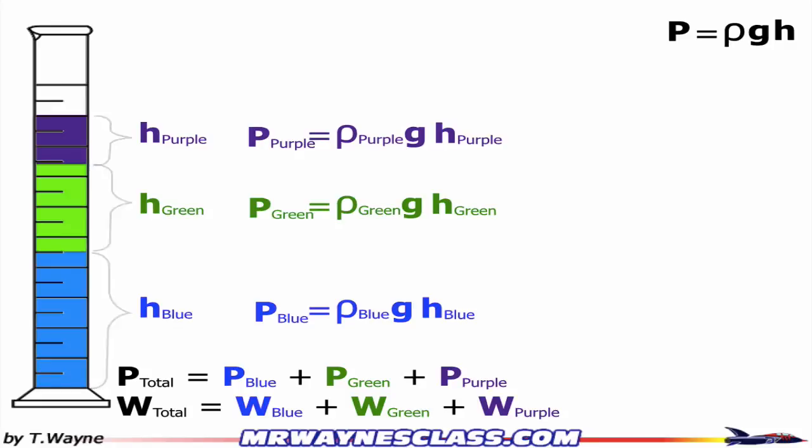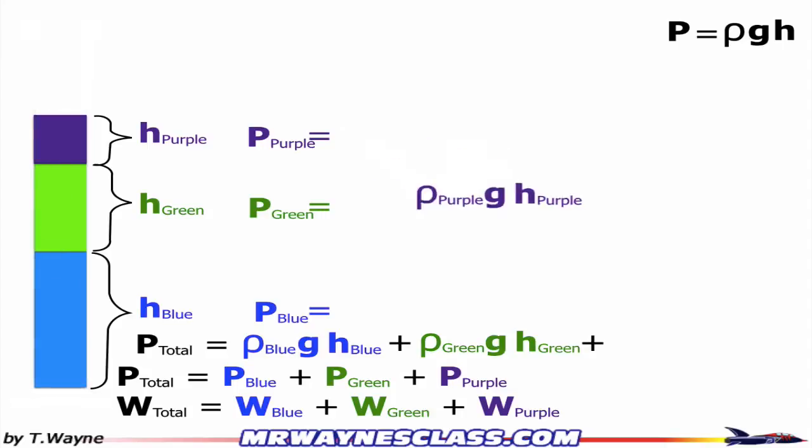All right, the total pressure is just going to be the sum of these three pressures. So rho gh for the blue, rho gh for the green, and then rho gh for the purple. And that's going to give me the total pressure.